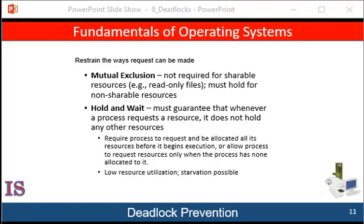Sharable resources don't require mutually exclusive access and therefore cannot be involved in a deadlock. Read-only files are a good example of a sharable resource — if several processes attempt to open a read-only file at the same time, they can be granted simultaneous access. A process never needs to wait for a sharable resource. However, we cannot prevent deadlocks by denying the mutual exclusion condition, because some resources are intrinsically non-sharable. For example, a mutex lock simply cannot be shared by several processes. While a printer cannot be shared, it is possible to use a software approach called a spooler to give the sense that everyone is able to print at once.